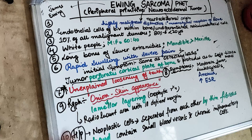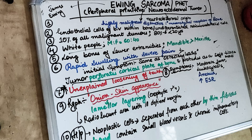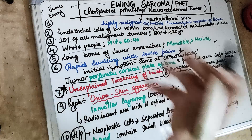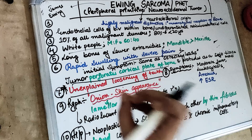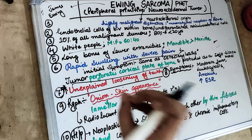Radiographically, there is a radiolucent area with an ill-defined margin — the borders are not well-defined. Because the tumour perforates the cortical plate, there is widespread destruction of the bone visible in the radiograph of Ewing Sarcoma.